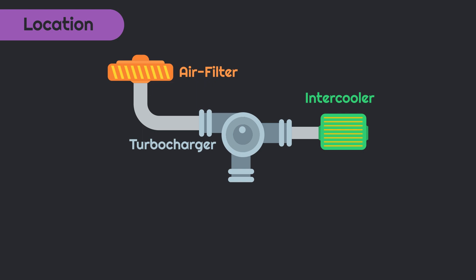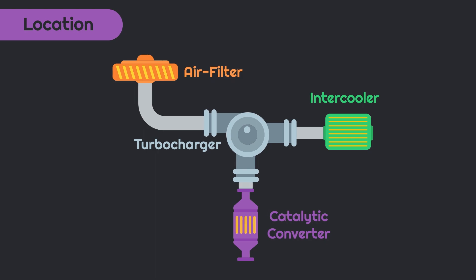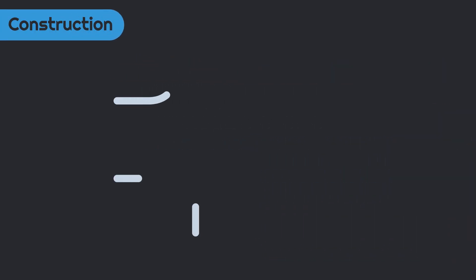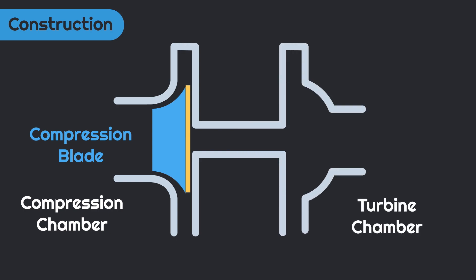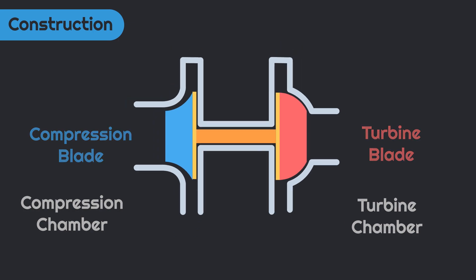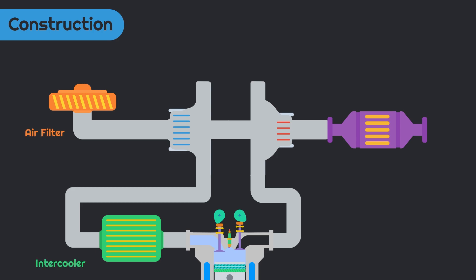Turbocharger consists of a compressor chamber in which a compressor blade is placed. On the opposite side, one turbine chamber is provided which consists of a turbine blade. Both of these blades are mounted on a common shaft which is mounted on both chambers respectively. The compressor chamber is connected with the air filter and intercooler, while the turbine chamber is connected with the exhaust manifold and catalytic converter.